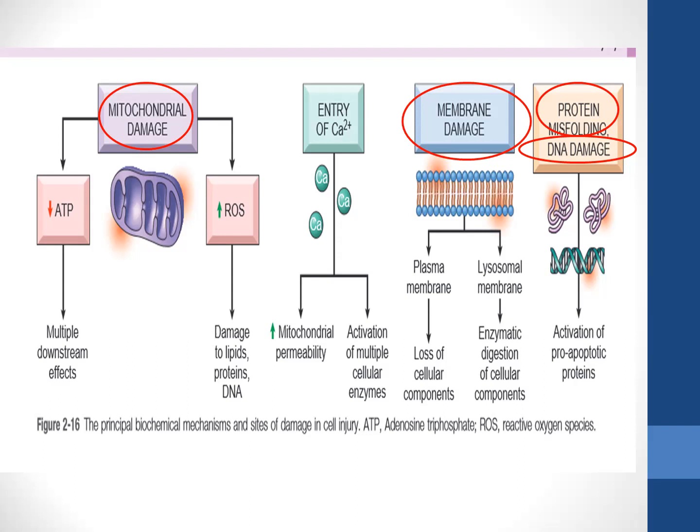If the plasma membrane is damaged, cell components will leak out. If the lysosomal membrane is damaged, it can result in leakage of the hydrolytic enzymes of the lysosome, which causes enzymatic digestion of cell components. Protein misfolding can also lead to cell injury, and DNA damage can activate various types of apoptotic proteins.